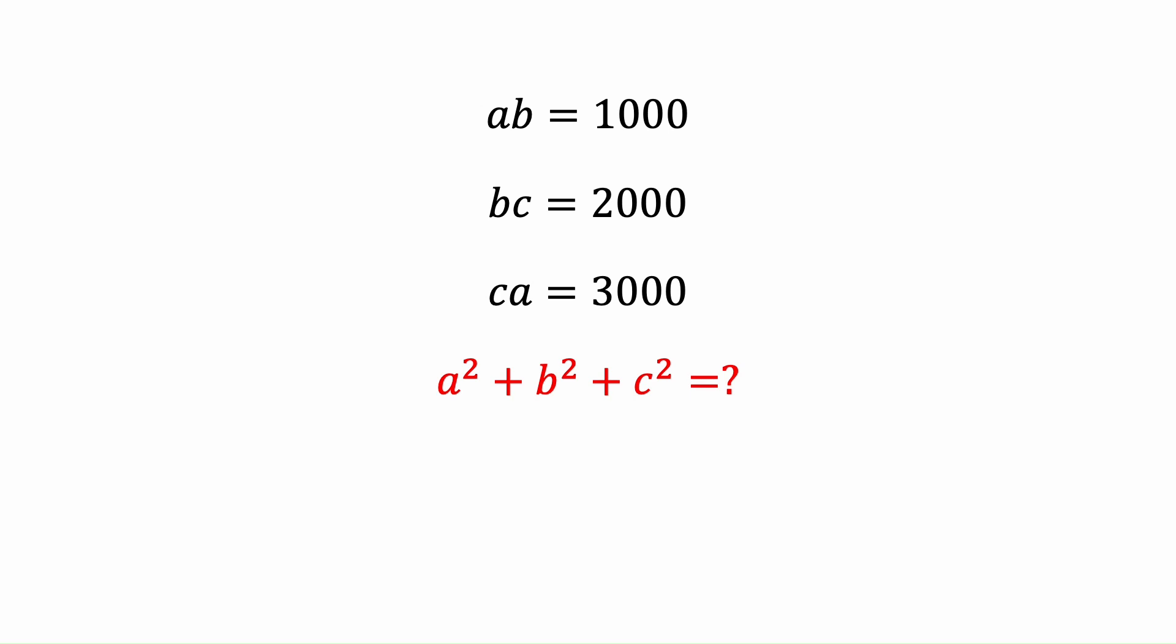Hello everyone, today we're going to solve this equation together. In this equation we have ab equals 1000, bc equals 2000, and ca equals 3000, and we want to find a² + b² + c².